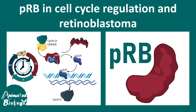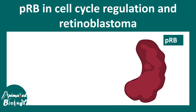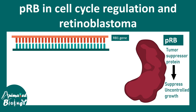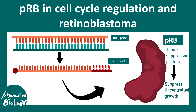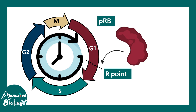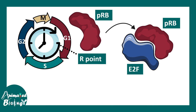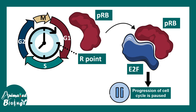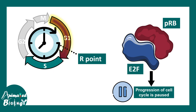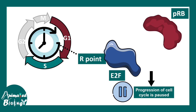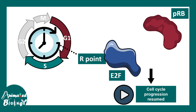PRB is a tumor suppressor protein that modulates cyclin D-CDK4 activity and regulates cell cycle progression. It is produced by the RB1 gene. PRB acts at the restriction point and can inhibit a compound known as E2F. E2F is important for cell cycle progression to S phase because it binds to DNA and helps produce S phase cyclins. But E2F can only do this when PRB releases it — so separating E2F from PRB is critical.